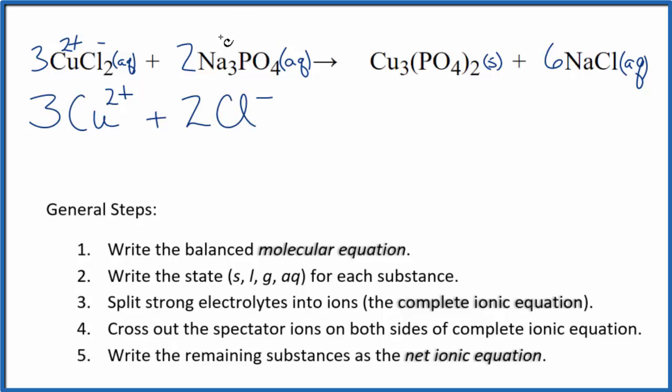Sodium is in group 1, so that will have a 1+ charge. And the phosphate ion, the whole thing, is 3-. Good one to remember. So we'll have 2 times 3, six sodium ions. And then we'll have two of the phosphate ions. These are the reactants in our complete ionic equation.